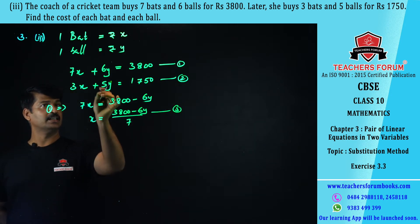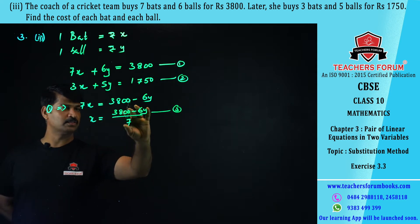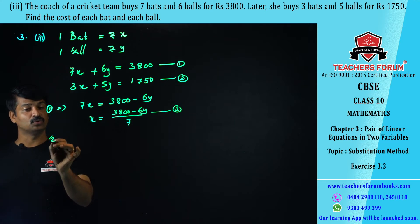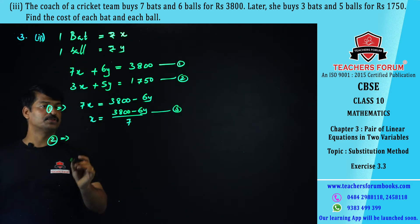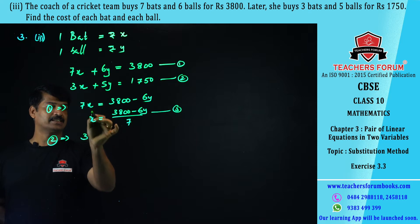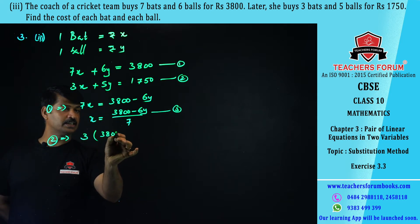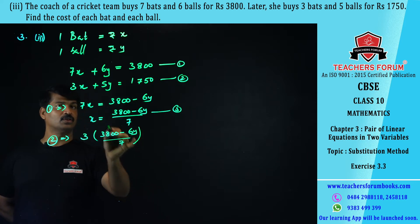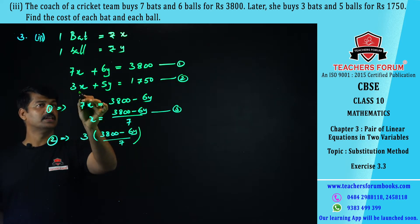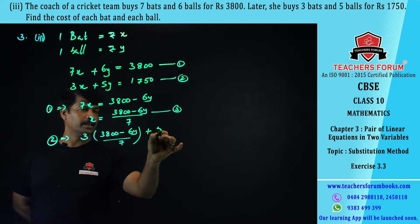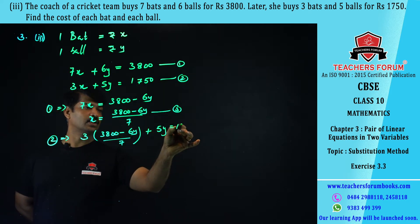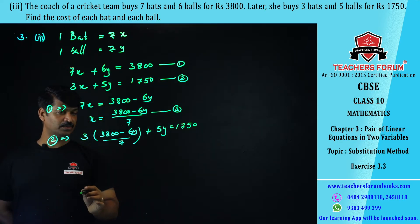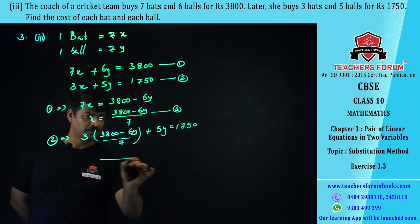Substituting the value of x from equation number three into equation number two, it becomes: 3 × (3800 − 6y)/7 + 5y = 1750. Taking 7 as the LCM, the numerator becomes 3 × 3800 = 11400, and 3 × (−6y) = −18y, plus 7 × 5y = 35y.